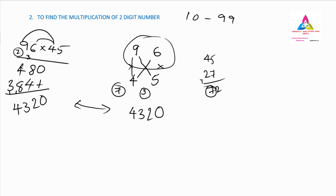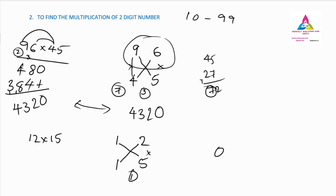If you practice this method, you can find answers very easily. This is also helpful for competitive exams. Let's try one more example: 12 into 15. Write 12 and 15 one below the other. First, 2 times 5 is 10, carry 1. Cross-multiply: 1 times 5 is 5, 1 times 2 is 2; 5 plus 2 is 7 plus carry 1 gives 8. Then 1 times 1 is 1. Final answer: 180. You can solve this with any two-digit numbers.